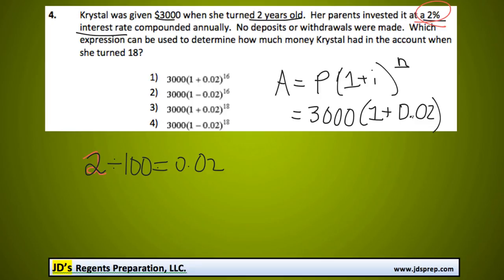And then the number of years that we're talking about here, this is where you might make a common mistake. When you see she turns 18, you think, okay, then the number of years is 18, right? So you think it's this one, but it is not because, if you read carefully...